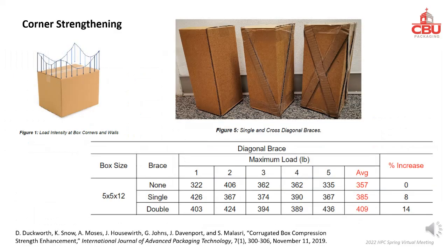It was discussed earlier that the four corners of a box carry two-thirds of the box compression strength. Thus, when box corners are strengthened, the box becomes stronger faster. In this study, a corrugated box was strengthened with diagonal braces. The stacking strength increases by 8% and 14% with single and double bracing, accordingly.